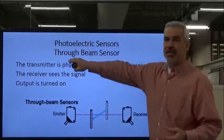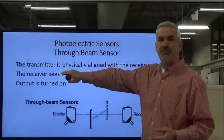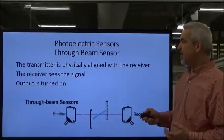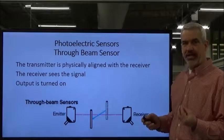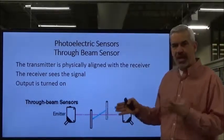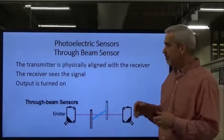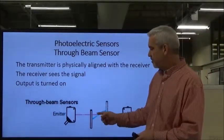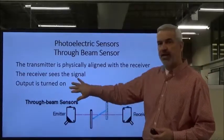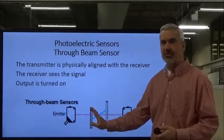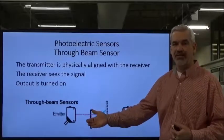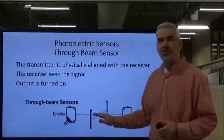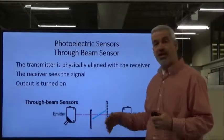With the through-beam type, the transmitter is physically aligned with the receiver. It sends out an LED light at a controlled frequency, and the receiver is tuned to receive that specific frequency. The emitter passes the signal through to the receiver, and as long as the receiver is seeing it, we've got an output turned on. These are used in safety devices and for part presence detection.